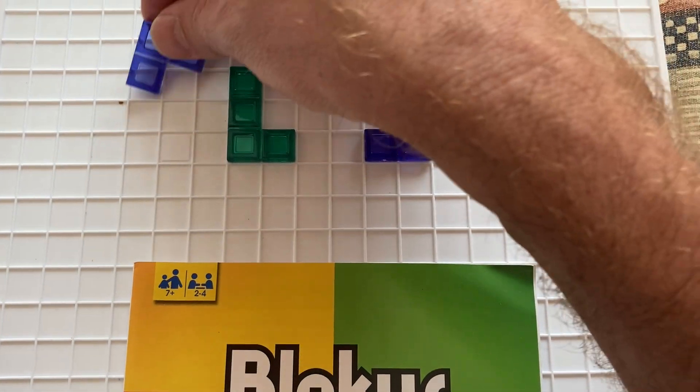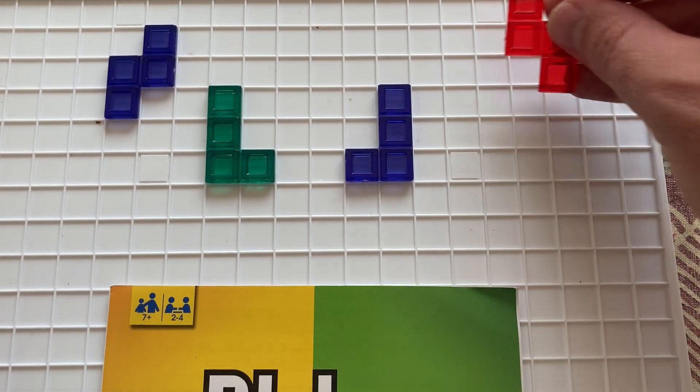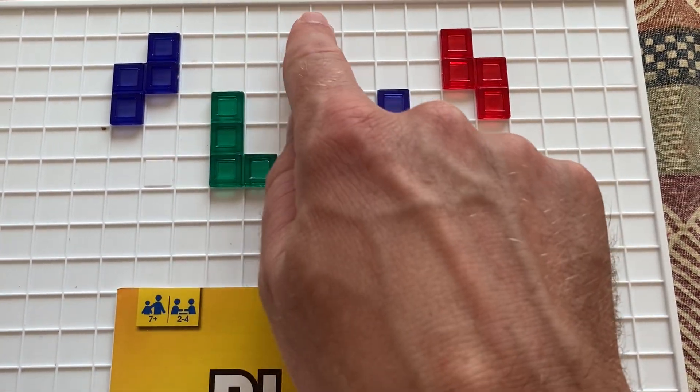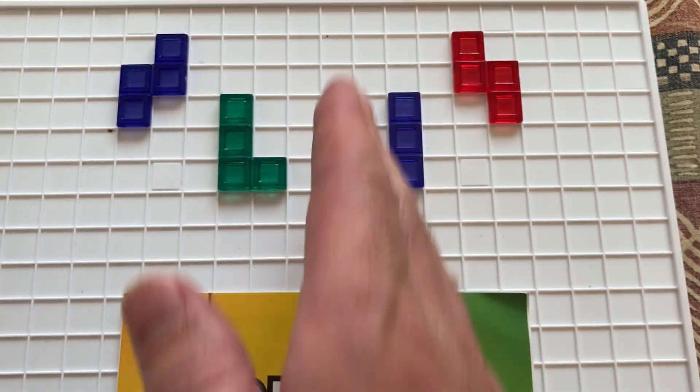So we could have other shapes and as long as they're the same shape and the same side of that mirror line, we'll have symmetry and reflection.